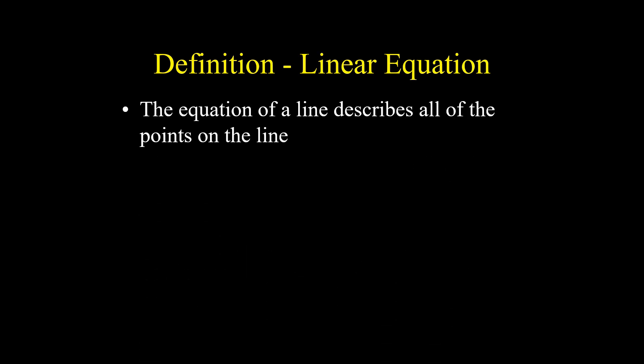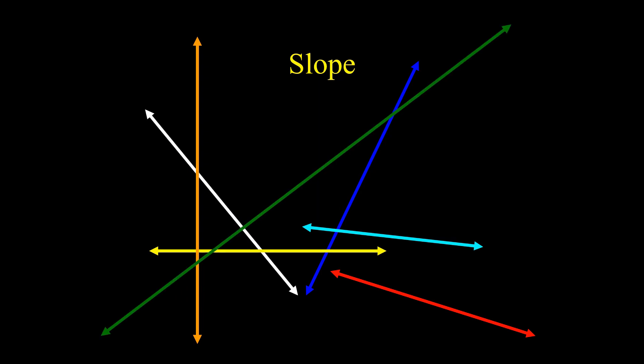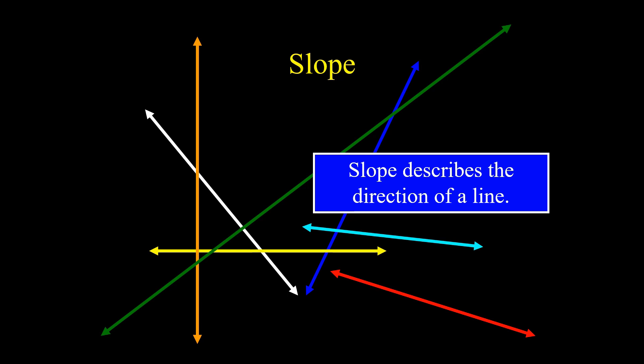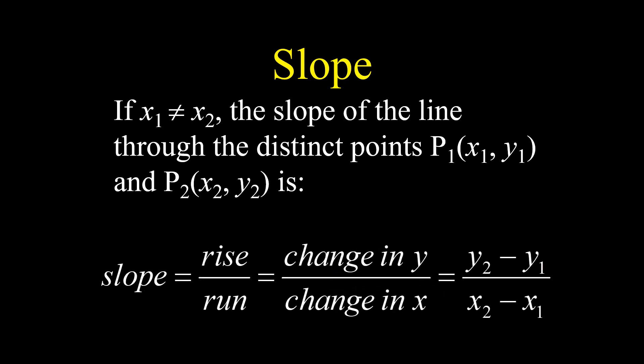The equation of a line describes all of the points on the line. Now let us discuss what is a slope. Slope is equal to rise over run, or equals change in y over change in x, or y sub 2 minus y sub 1 over x sub 2 minus x sub 1 using the formula.